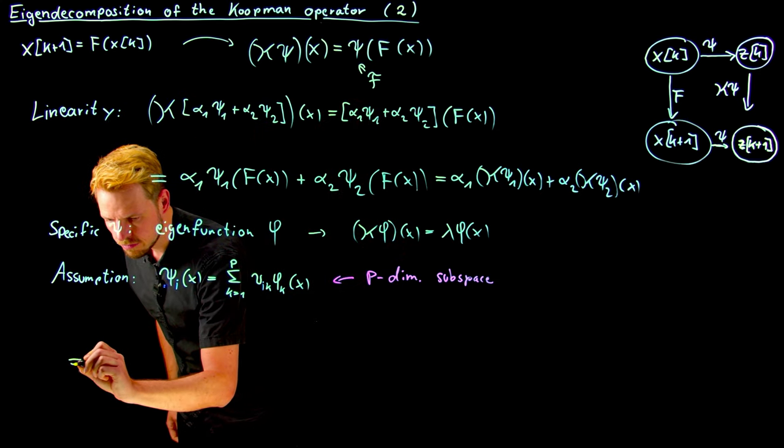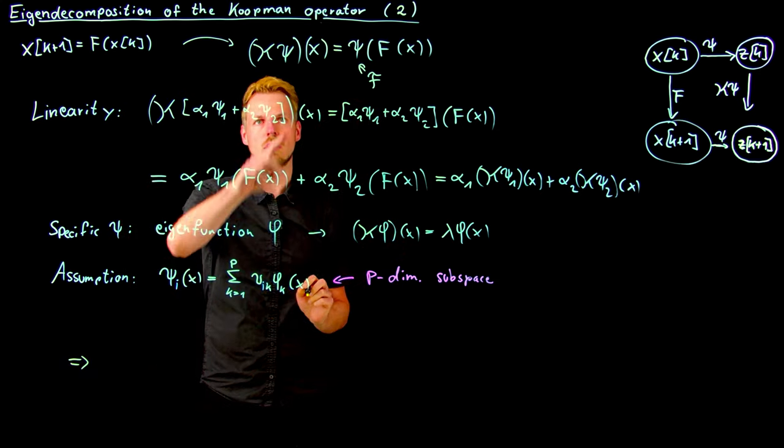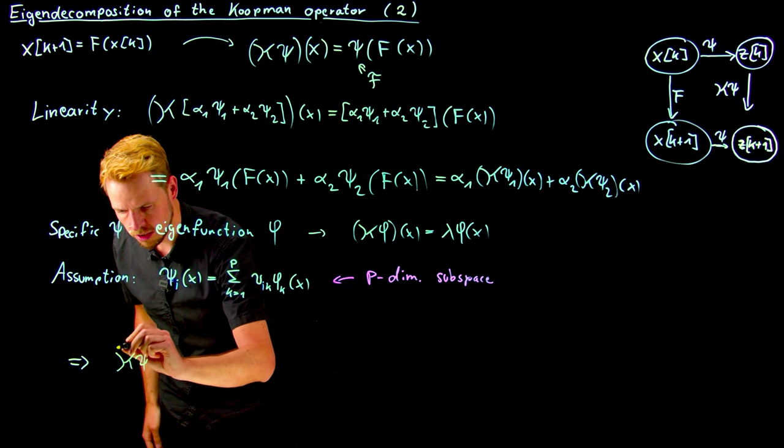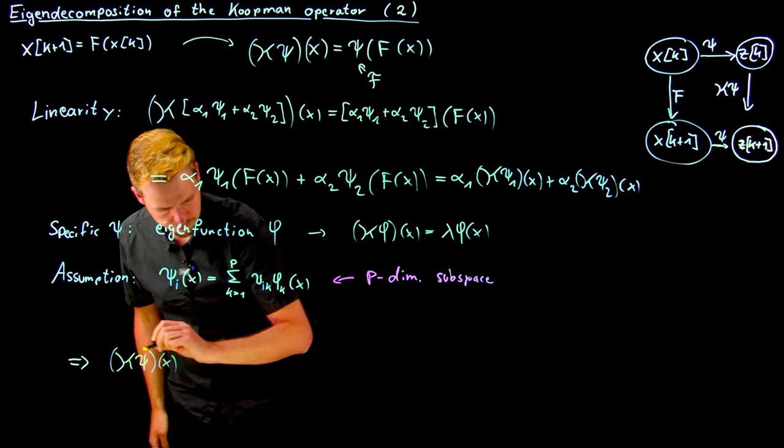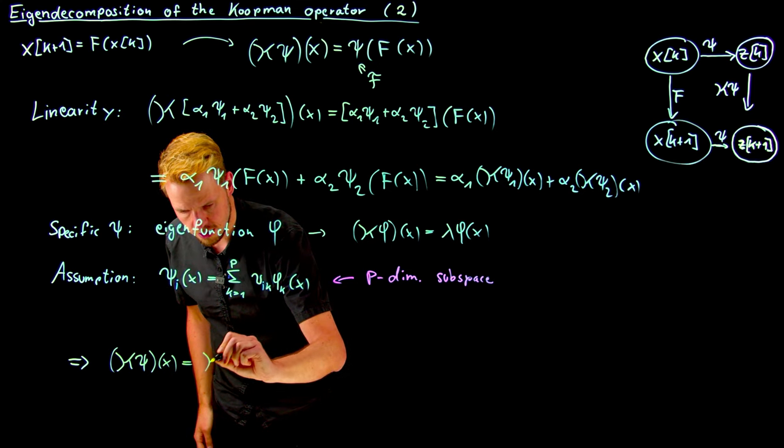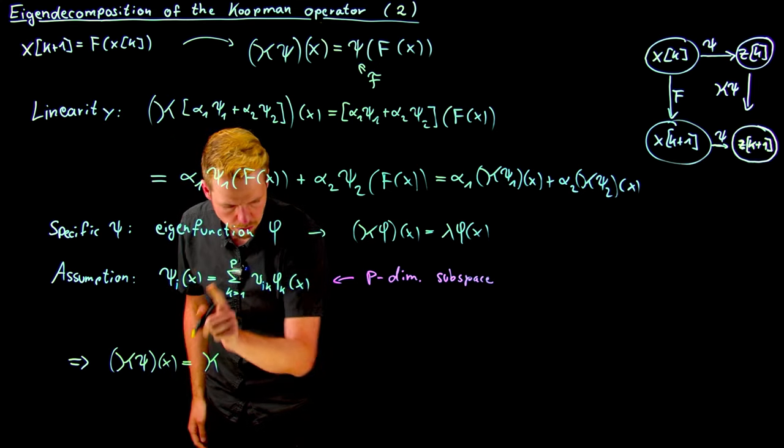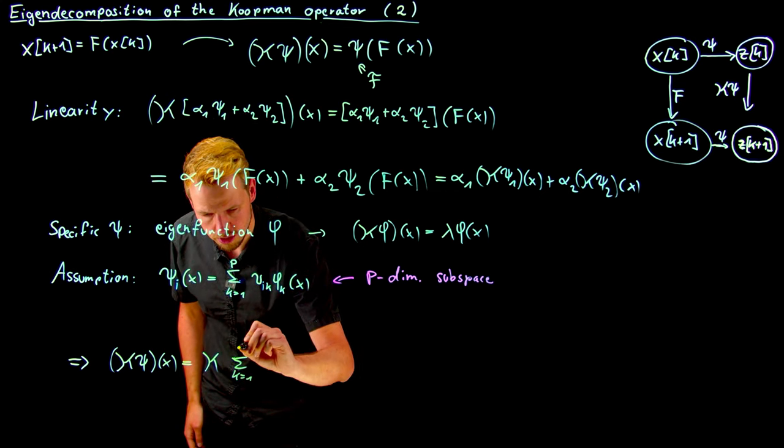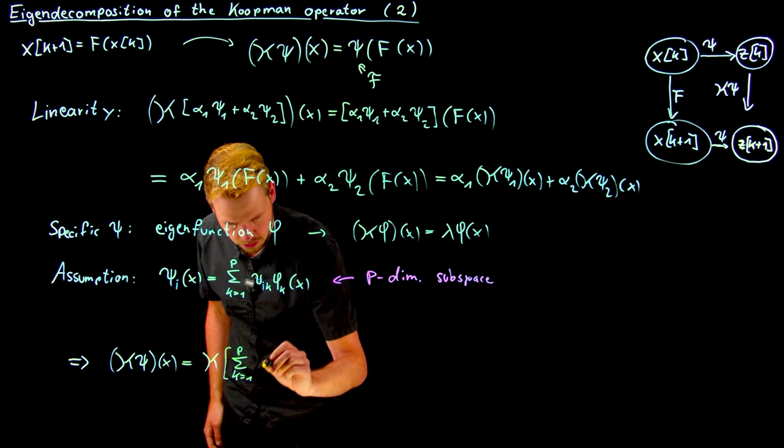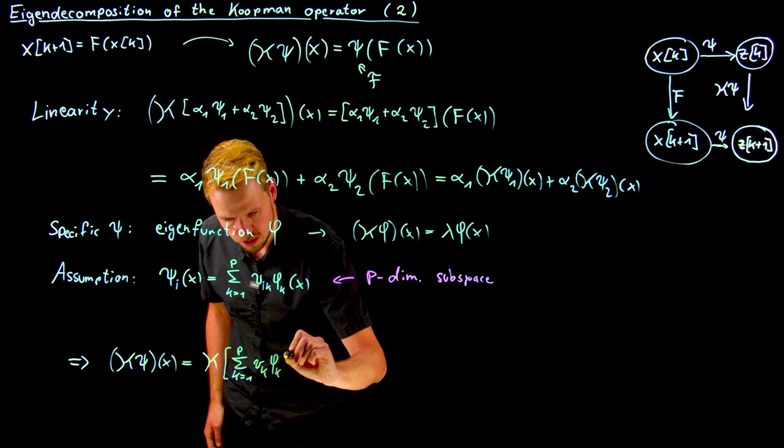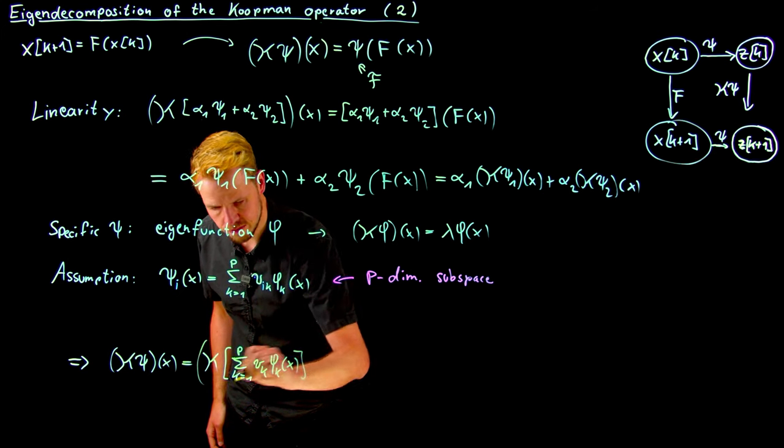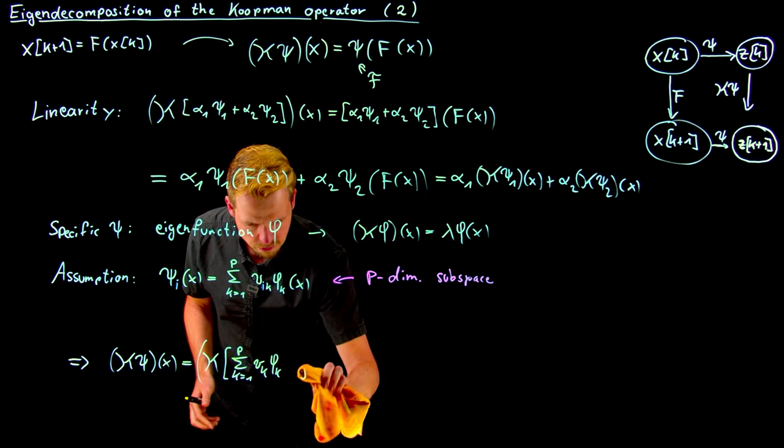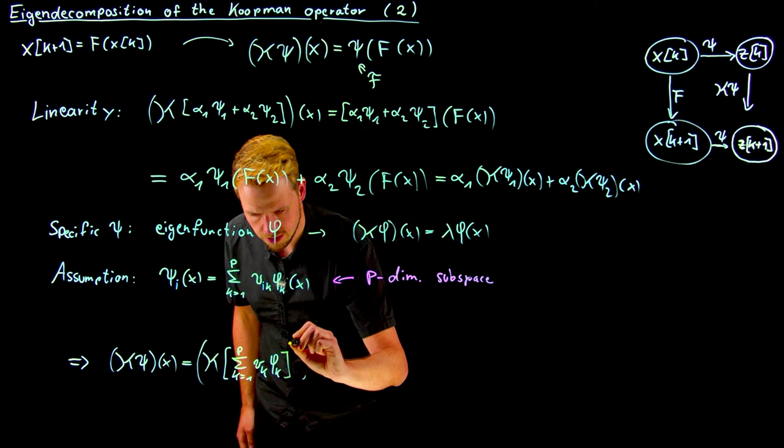So what we have is K psi of x is now K applied to this psi. I'm going to leave out the indices now to make my life easier. Sum k equal 1 to p v_k phi_k of x.